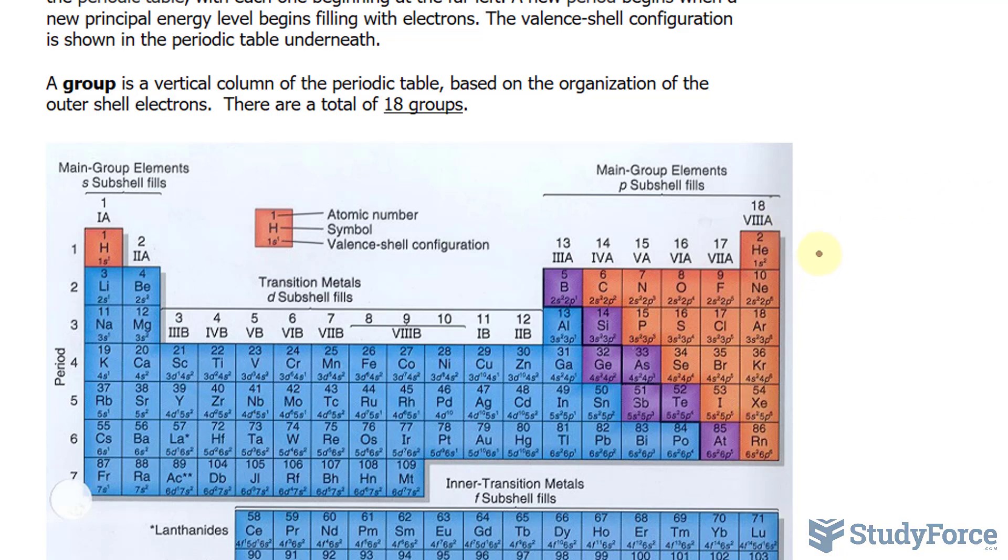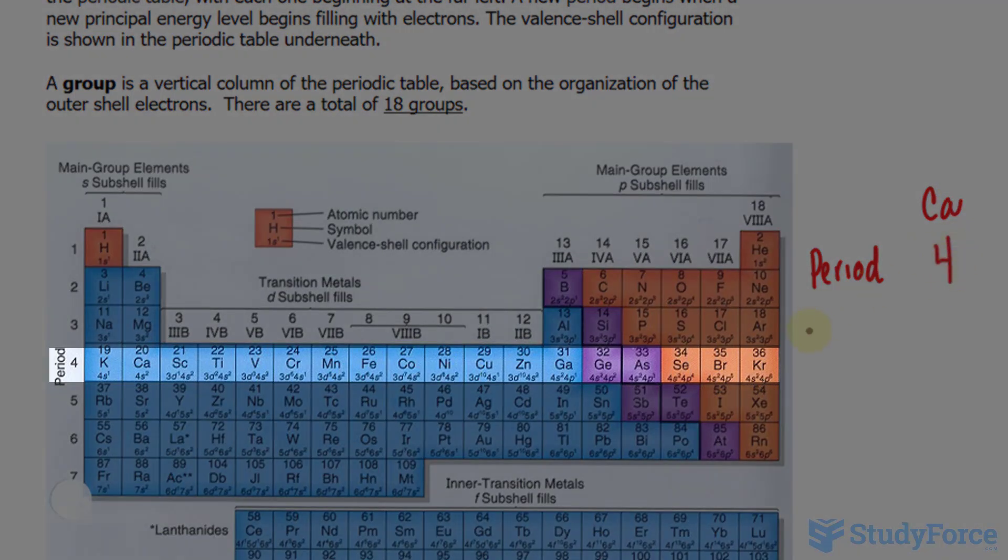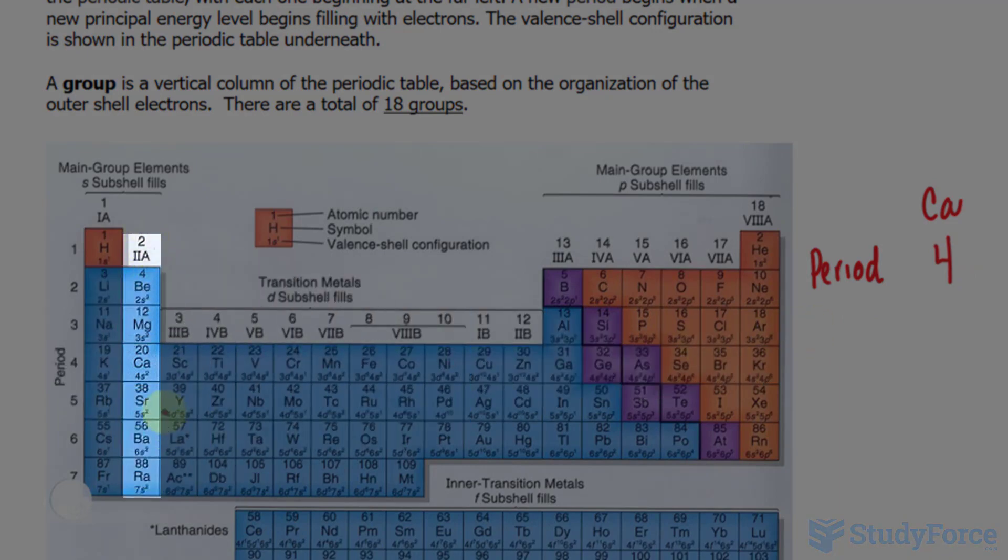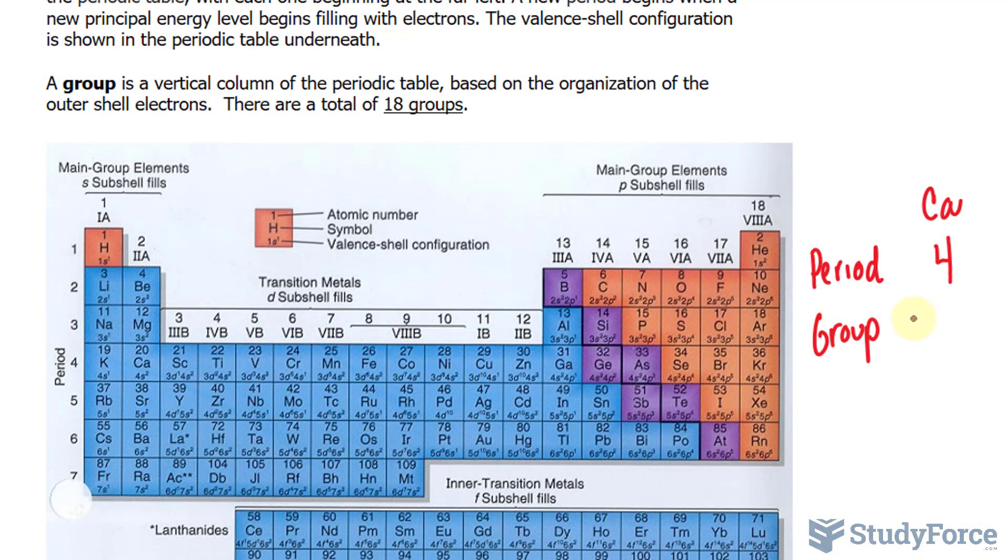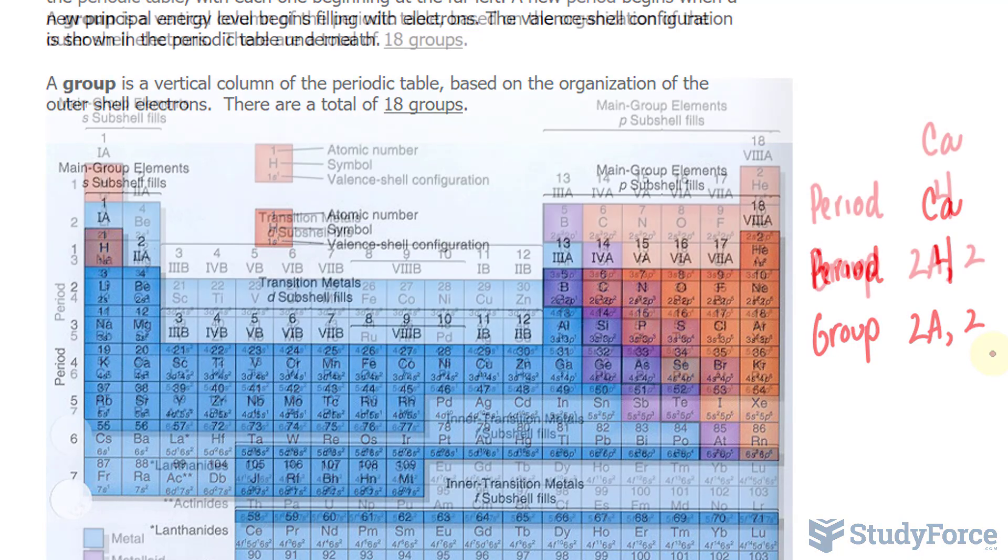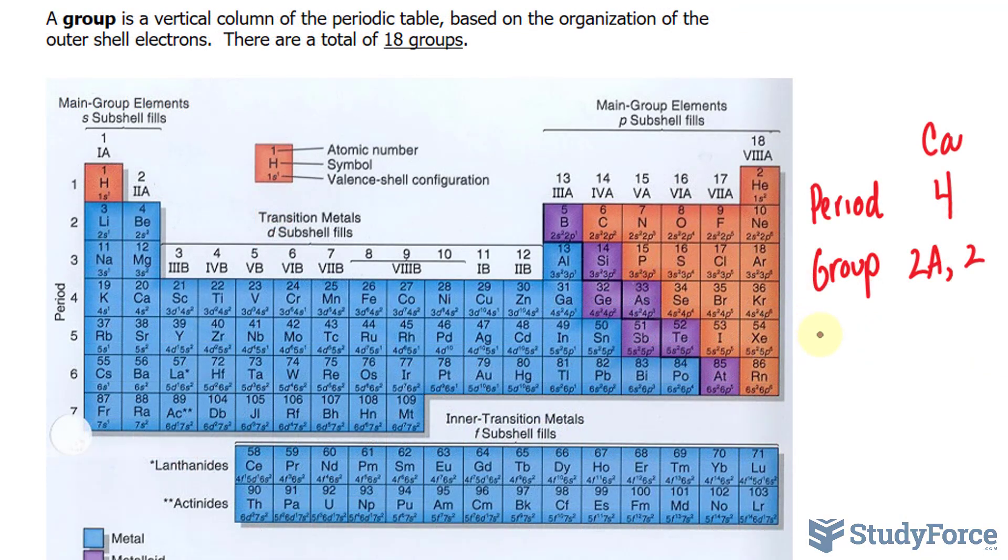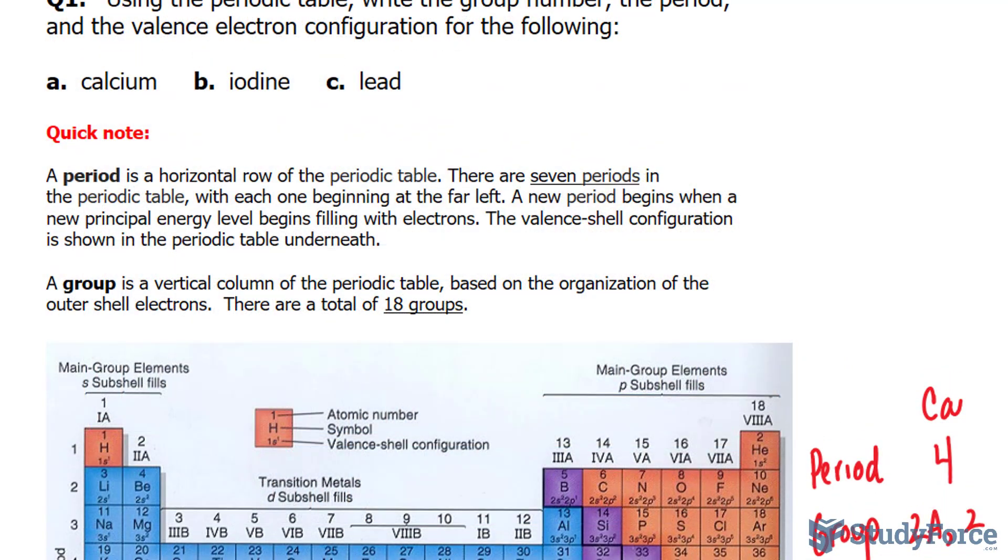So for calcium, it has a period of 4. It is found in the second group, so we can write down 2a, or simply 2, and all of these metals found in this group, including calcium, are referred to as alkaline earth metals. That's their family name. Also, I'll write down that the valence shell configuration is 4s2.